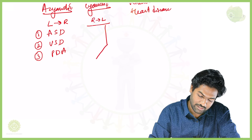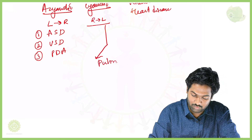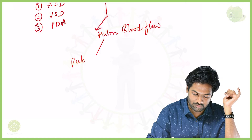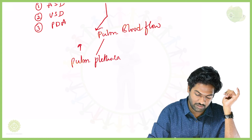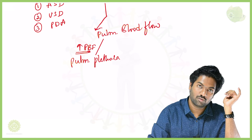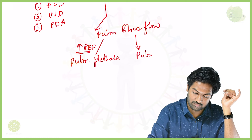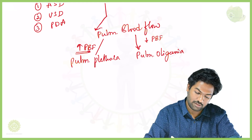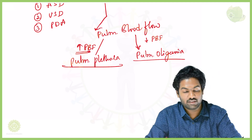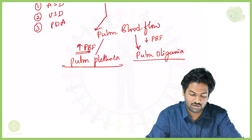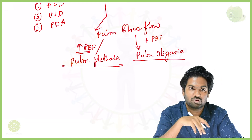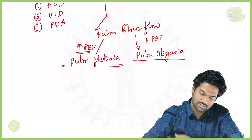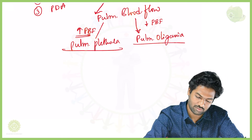Cyanotic heart diseases can be classified based on pulmonary blood flow. If pulmonary blood flow is increased, we call it pulmonary plethora. If pulmonary blood flow is decreased, we call it pulmonary oligemia. On X-ray, if there are too many homogeneous shadows near the hilar regions it suggests pulmonary plethora; if the lung fields appear dark and black with thin vessels it suggests pulmonary oligemia.